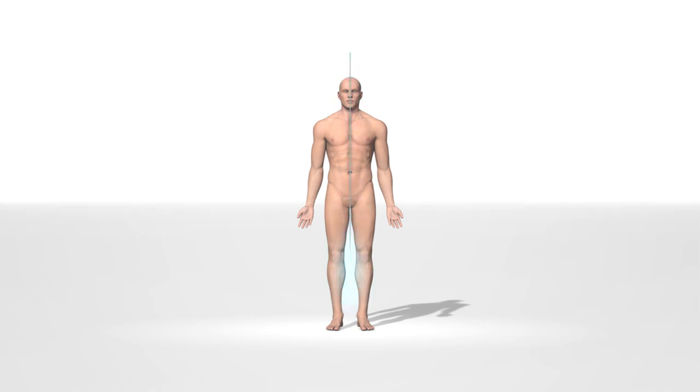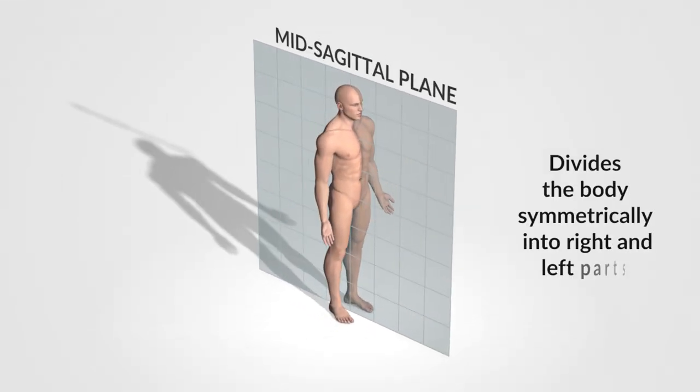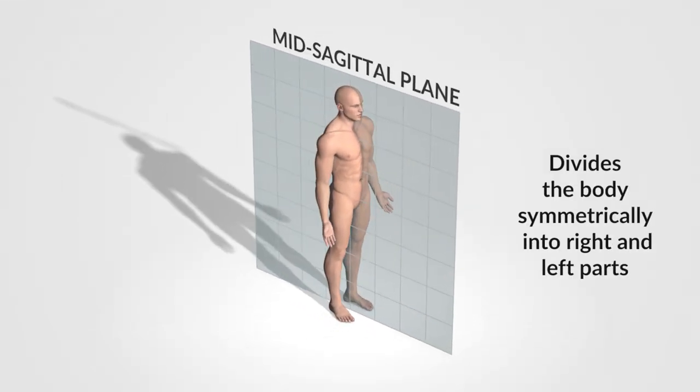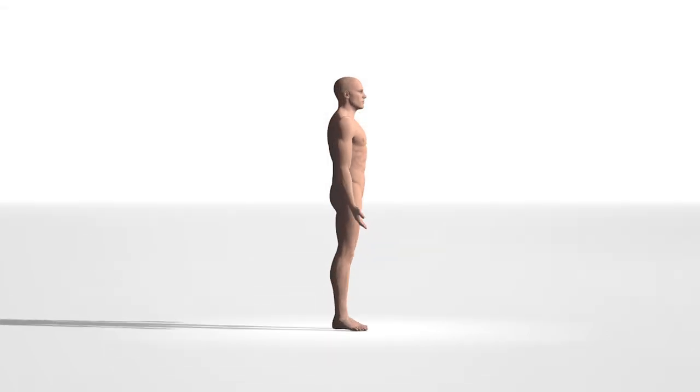There are three cardinal anatomical planes. The mid-sagittal or median plane is a vertical plane that divides the body symmetrically into right and left parts.